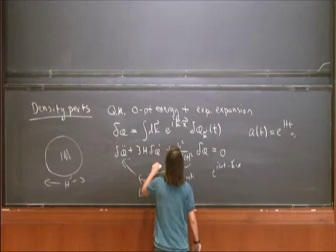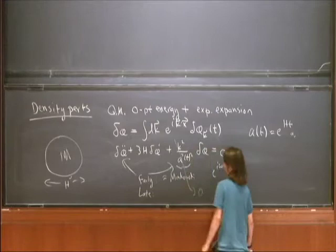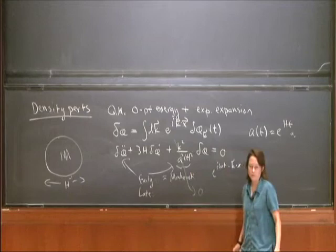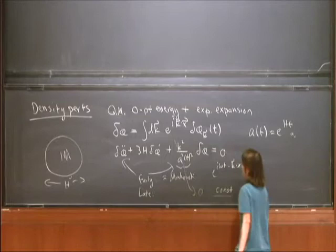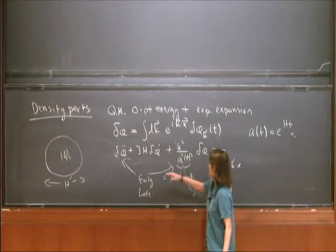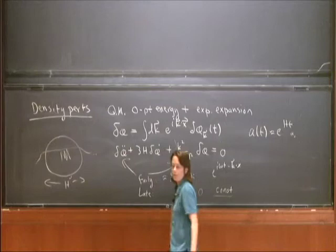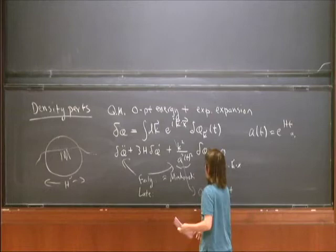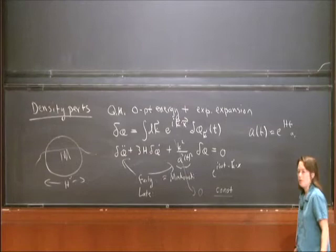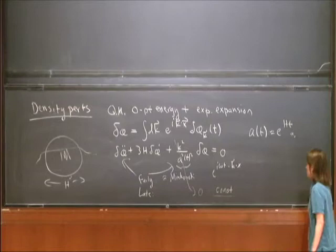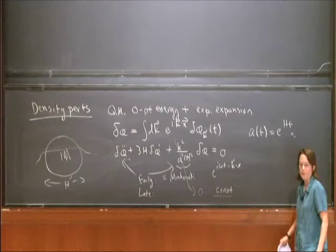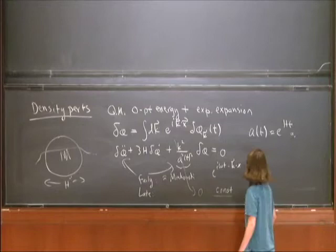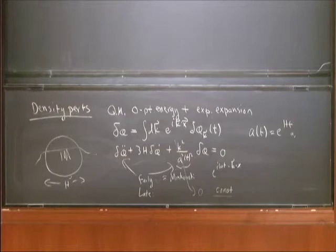On the other hand, at very late times, the momentum term dilutes away exponentially fast, and these two terms permit a constant solution. What we basically want to do is normalize things properly to obtain the constant solution that results when the mode has stretched to this point. Later on, when the acceleration stops, these modes re-enter the horizon and ultimately contribute initial conditions to the Boltzmann equation during recombination — but I'm not going to talk about that. Let's just get this amplitude.